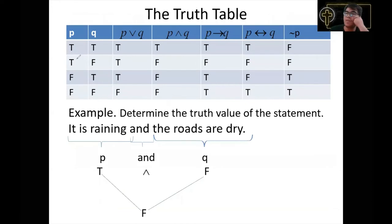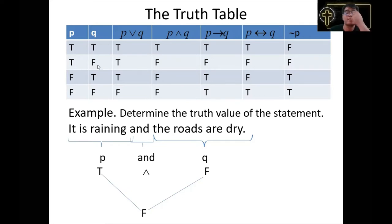Now let's talk about truth tables. A truth table includes columns for P, Q, P ∧ Q, P ∨ Q, P → Q, P ↔ Q, and ¬P. The first column is about P, the second is Q, and subsequent columns evaluate each compound statement. This is the basis for further evaluation of compound statements.